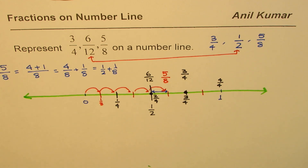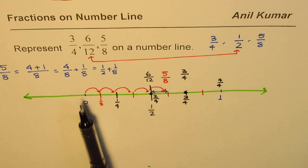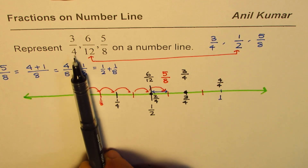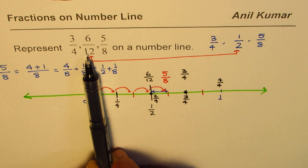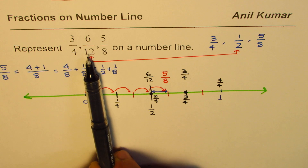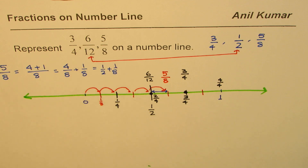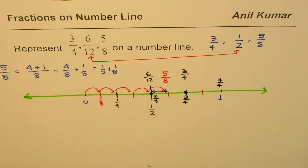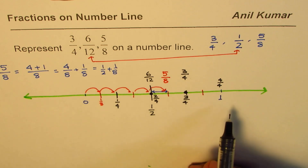So you've understood how to plot points on a number line when fractions have different denominators. The idea is to divide the line into equal pieces equal to the denominator. But importantly, sometimes you may have to simplify first — as we did for 6/12.